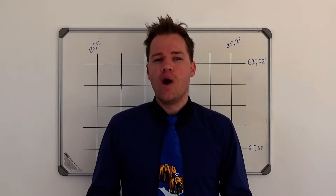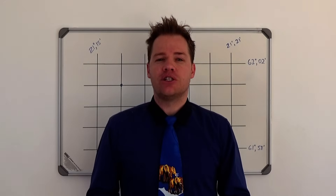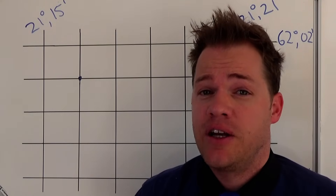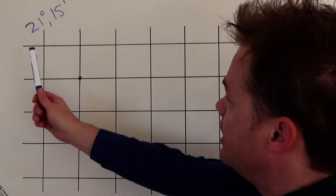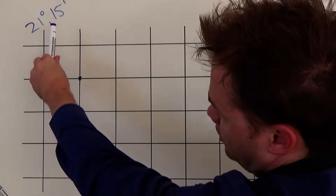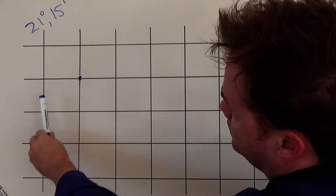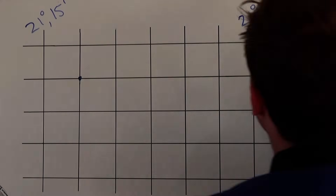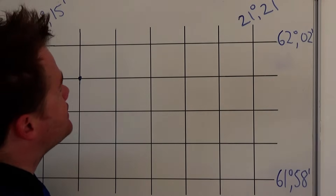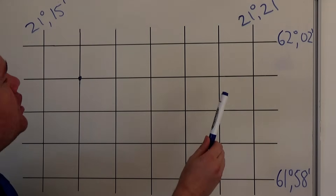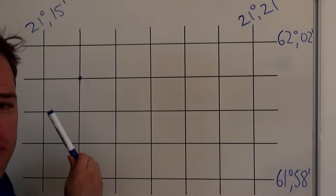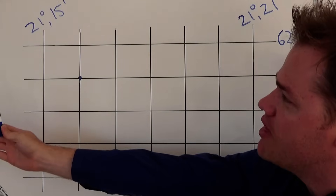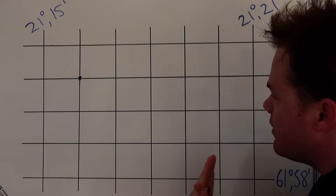Before we start, it's important that we know where the equator is and where the Greenwich Meridian is when we look at this map. If we look at the map here and we see 21 degrees 15 minutes, it means everything on this line of longitude is 21 degrees and 15 minutes. As we move in this direction, the numbers increase — in other words, we are moving further away from the Greenwich Meridian. So the Greenwich Meridian is on that side of the map, and everything here is east of it.